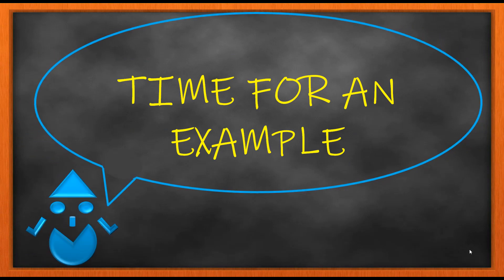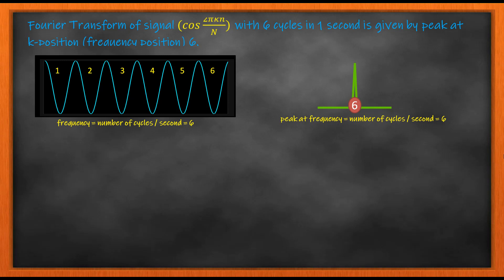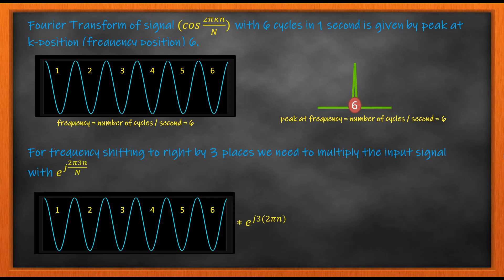Now let us see an example of the frequency shifting property which will make the derivation clearer. Let us take a sinusoid which has six cycles per second. The sinusoid shown here has six cycles in one second, which means its frequency is six. Ideally, the Fourier transform of this signal will have a peak at six since the frequency of the sinusoid is six. We are going to apply the frequency shifting property to this signal with six cycles.